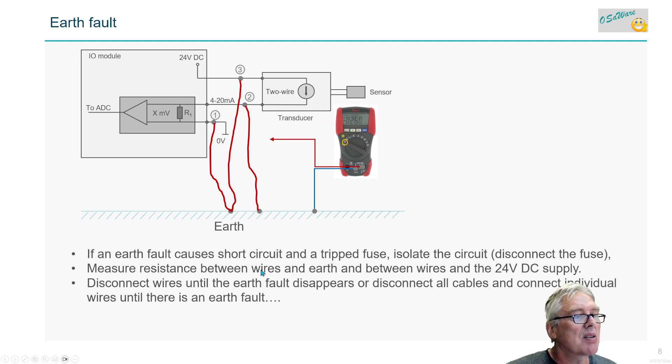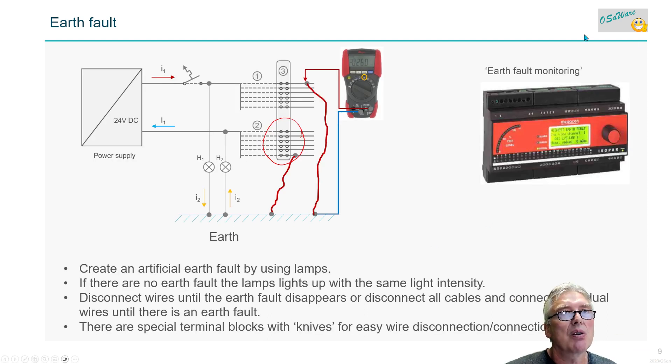Another way is to be systematic: disconnect all the cables, then connect one and one cable until you get the earth fault. The last one you connected - there's the earth fault. There is earth fault monitoring equipment, usually for high power systems. Earth fault is dangerous because you can get in contact with high voltage which is going to hurt you.